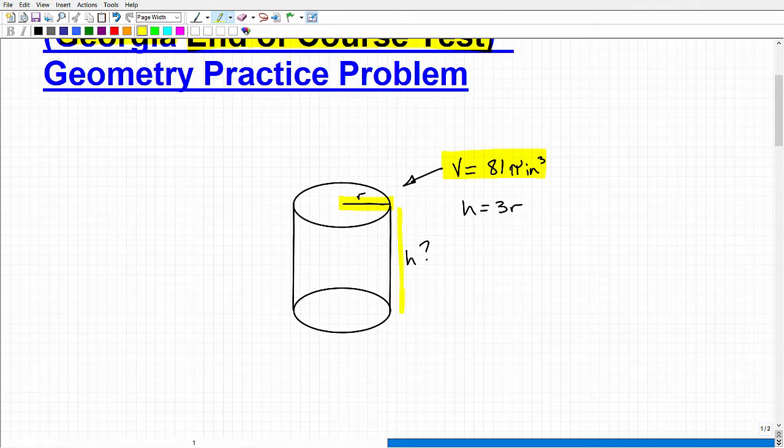And I have some sort of relationship here between those two variables. So I'd like you to go ahead and tell me what R and H are. I want to know the radius and the height of this particular cylinder.